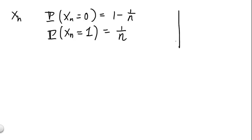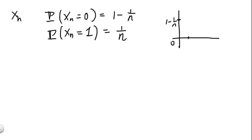Graphically, we see that we have a pretty big mass of 1 minus 1 over n at location 0, and a tiny bit somewhere out there — only 1 over n. So this will be the PMF for xn.